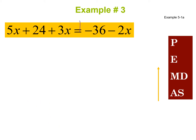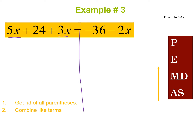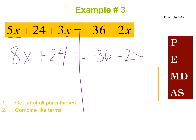Third and final example. Drawing my line at the equal sign. No parentheses this time. On the left-hand side I have 5x and 3x — those are like terms, so 5 plus 3 gives me 8x. The 24 has no like term, so it stays as plus 24. On the right-hand side, negative 36 and negative 2x are not like terms, so I rewrite that as negative 36 minus 2x.